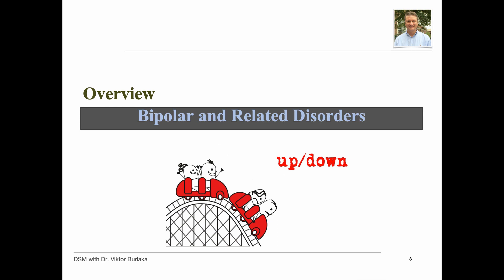Bipolar disorder, formerly called manic depressive illness or manic depression, is a mental disorder that causes unusual shifts in mood, energy, activity levels, concentration, and the ability to carry out day-to-day tasks. There are three types of bipolar disorder, all involving clear changes in mood, energy, and activity levels. These moods range from periods of extremely elevated, elated, irritable, or energized behavior — known as manic episodes — to very sad, down, or hopeless periods — known as depressive episodes. Less severe manic periods are known as hypomanic episodes.